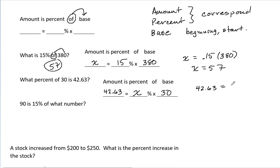42.63 equals x times 30. So to solve, we would divide. x is equal to 1.421.